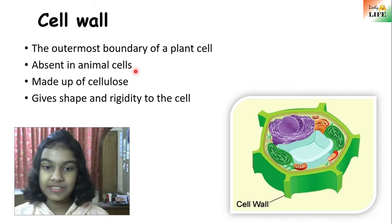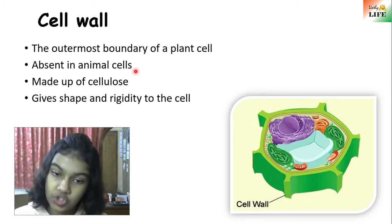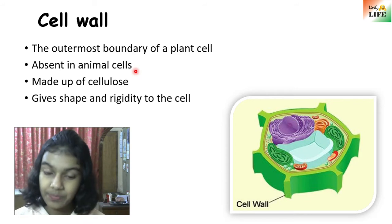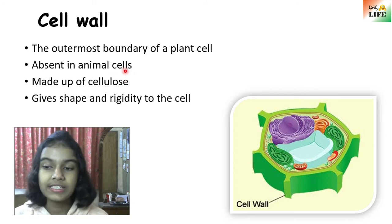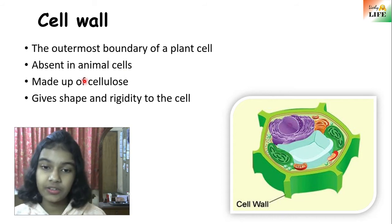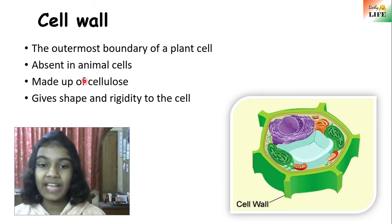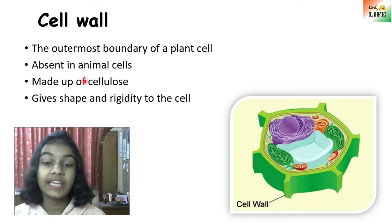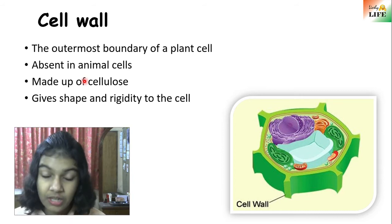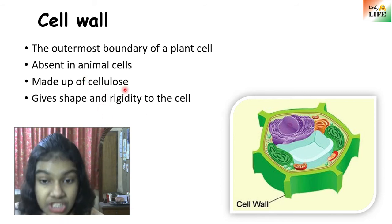Cell wall is absent in animal cells — you will never find a cell wall in animal cells. In humans, for example, we do not have any cell walls. Only plant cells have a cell wall. Cell wall is the outermost layer of the plant cell and it is made up of cellulose. Plants need this additional layer because they cannot move — to withstand storms, rain, and heat, plants need a lot more protection than animals.